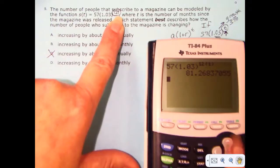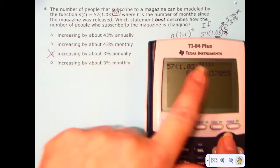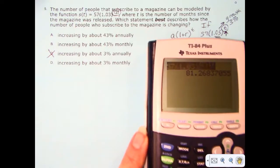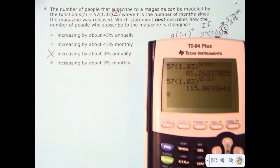The second month, the only thing that changes is the T changes to a two. So I'm going to go up and copy that and change that one to a two because at the end of the second month, I'm going to have 115 people subscribe to the magazine. That's a pretty big jump. And when it's a pretty big jump, you can say it's not 3% because 3% is a small jump.